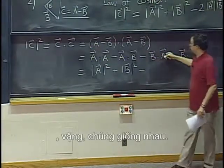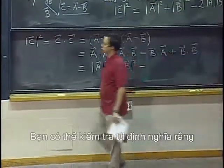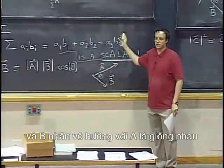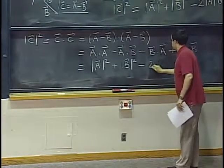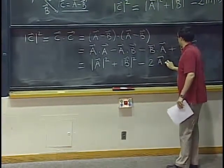And then these two terms, well, they are the same. You can check from the definition that a dot b or b dot a are the same thing. So there is no hidden trick here. This is really minus twice a dot b.